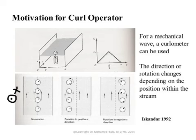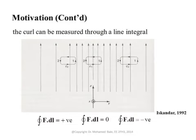It's useful to use a curlometer to measure the curl of mechanical waves, but what if we have a wave given by a mathematical expression? For electromagnetic waves, we cannot use a mechanical curlometer. There must be another way — the mathematical way to measure curl is through a line integral.